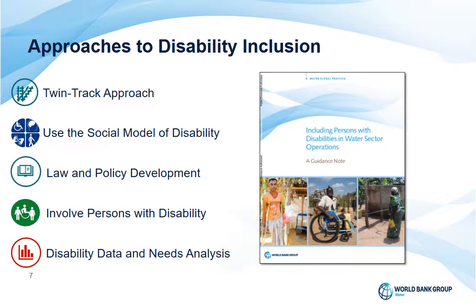It's recommended to use gradual scales of functional difficulties rather than yes or no questions. For example, a WASH poverty diagnostic conducted in Tajikistan found that 55% of surveyed households had at least one household member facing some level of difficulty with core functional domains — a number that would have probably been much lower if the question had been formulated as a yes or no question.